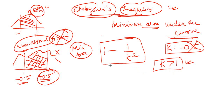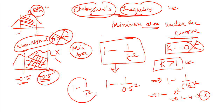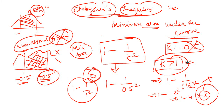In the case of k = 0.5, we will not be able to solve. It is 1 minus 1 by 0.5 squared, which is 1 minus 1 by 0.25, giving 1 minus 4, which becomes minus 3. You cannot have a probability that is negative. Even k = 1 gives zero, since 1 minus 1/1² = 0, and the area cannot be zero. So the condition is that k must be greater than 1.